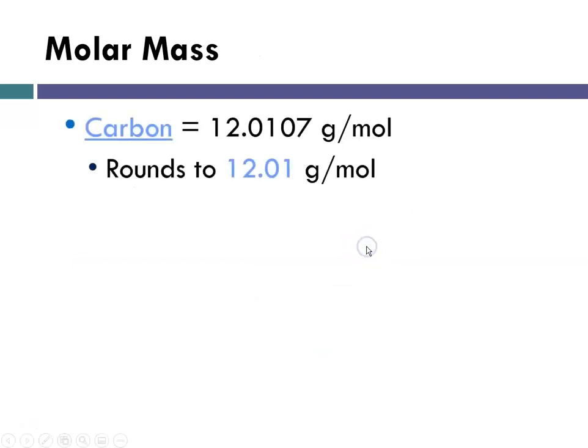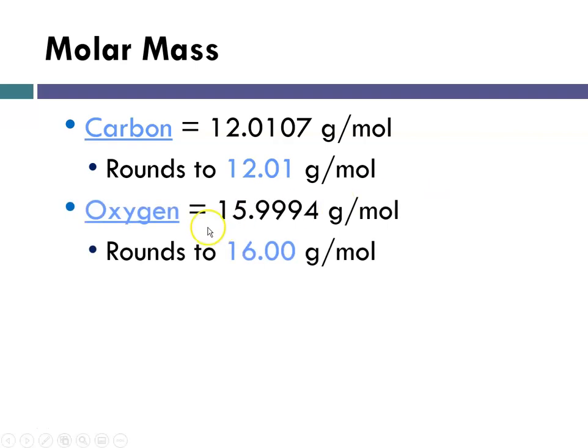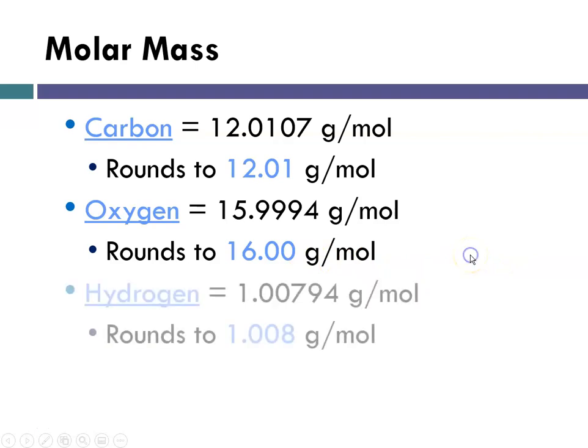So carbon on the periodic table is listed as 12.0107 grams per mole. Rounding to the hundredths place would give me 12.01 grams per mole for atomic mass for carbon. Oxygen, 15.9994, rounded to the hundredths place will be 16.00 grams per mole, reading off of the periodic table. And hydrogen, 1.00794 is going to round to 1.008. So as we do these and as we use them for calculations, we're going to have to be careful to always round to the hundredths place.